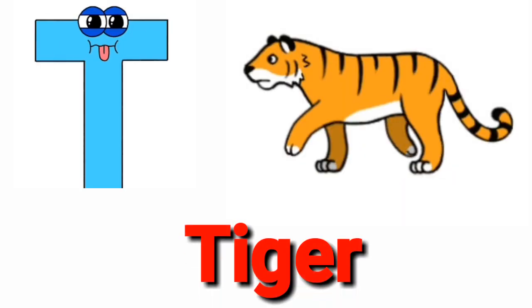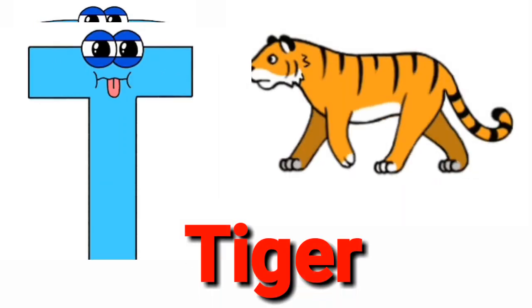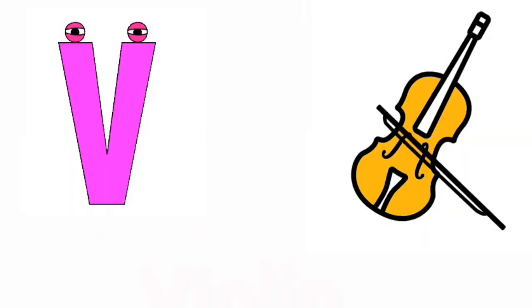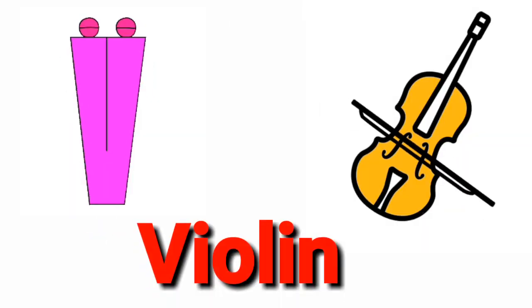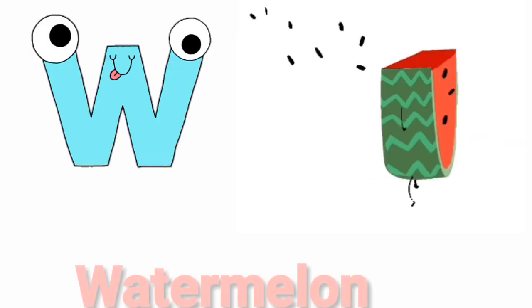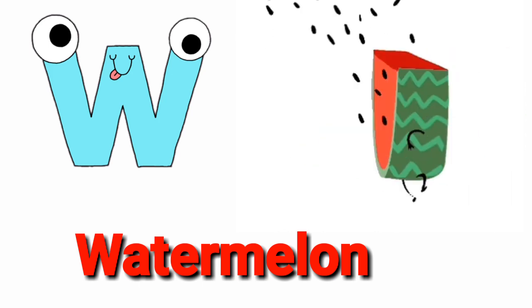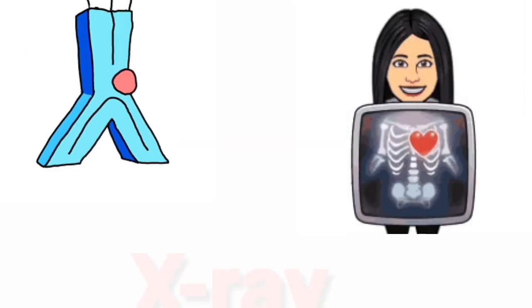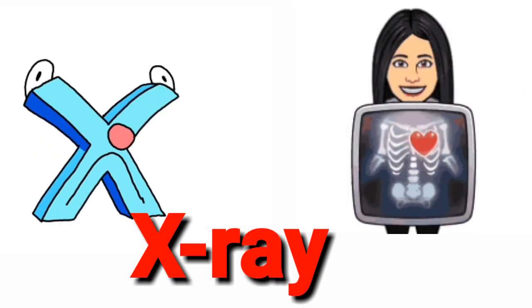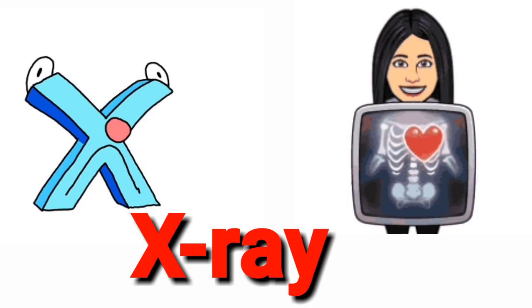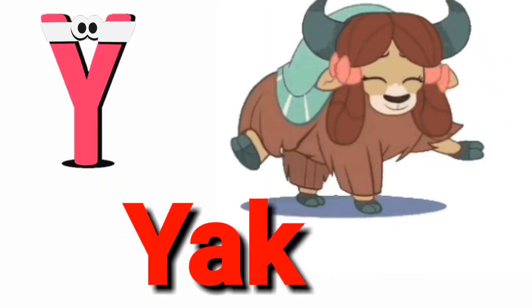S for son, T for tiger, U for umbrella, V for valen, W for watermelon, X for x-ray.